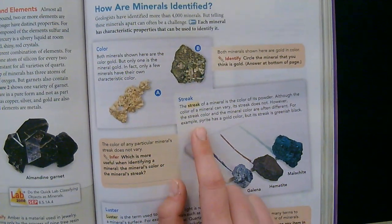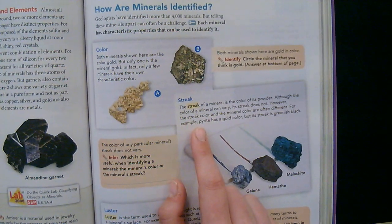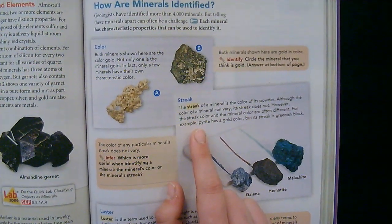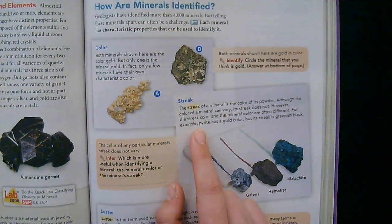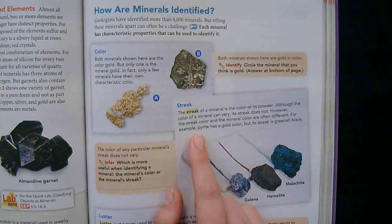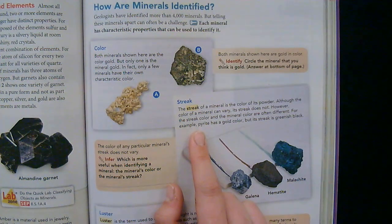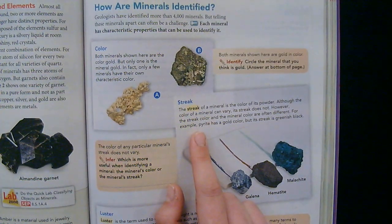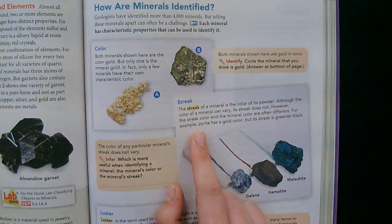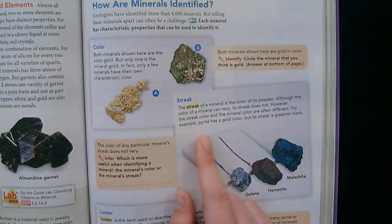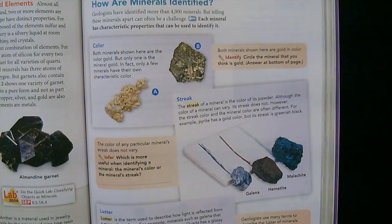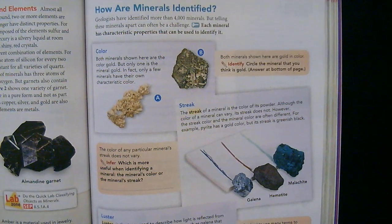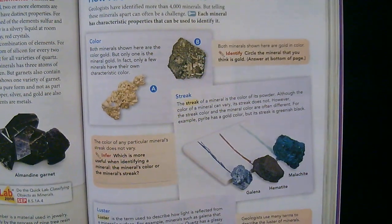Streak. The streak of a mineral is the color of its powder. Although the color of a mineral can vary, its streak does not. However, the streak color and the mineral color are often different. For example, pyrite has a gold color, but its streak is greenish black.